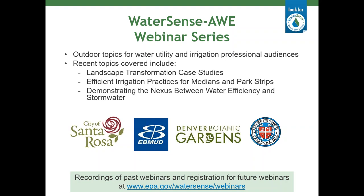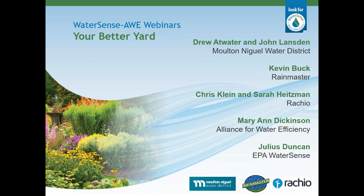Some of the more recent webinars we've had include a webinar on landscape transformation case studies, efficient irrigation practices for medians and park strips, and demonstrating the nexus between water efficiency and stormwater. Recordings of past webinars and registration for future webinars can be done at the EPA WaterSense webinars website.